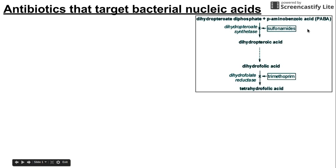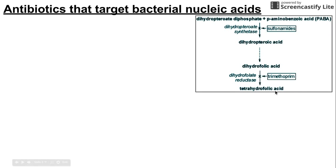Before we begin, I want to give a brief overview of this pathway that makes tetrahydrofolic acid, or tetrahydrofolate. Tetrahydrofolate is integral in making nucleic acids, so if we don't have THF, we won't be able to make nucleic acids.